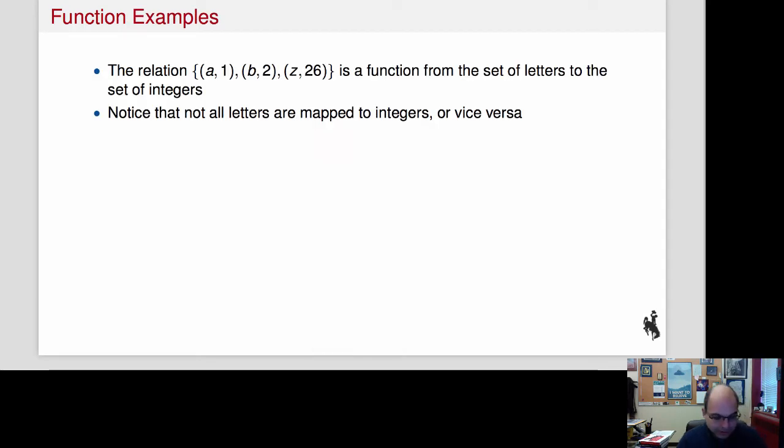So let's look at some examples here. Here's a relation, and notice I'm using the relation syntax: {(A,1), (B,2), (Z,26)}, and that's a function from the set of letters to the set of integers. And you see how we come up with it—A is 1, B is 2, and so on until Z is 26. I say so on just to give you the intuition, although notice that there's actually only three elements in this set.